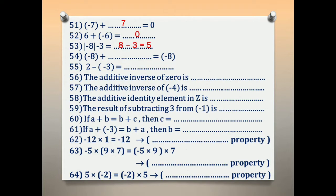Number 54: negative 8 plus blank equals negative 8. What number, if added to negative 8, gives the same number? The answer is 0. Adding 0 to any number gives the same number.